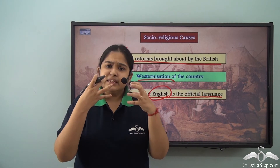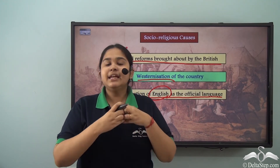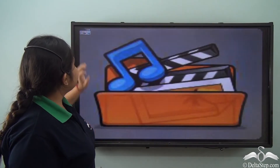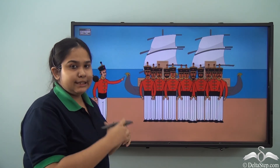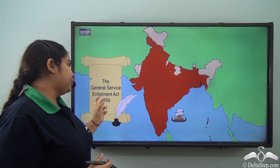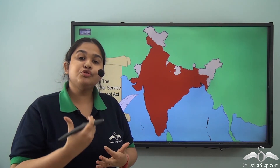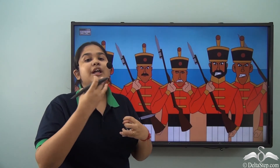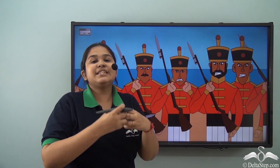Certain decisions being taken by the British company and government were something Indians could not agree with. As seen in the animation, a British official is explaining new ideas to Indian soldiers under the British military. The General Service Enlistment Act of 1856 made it absolutely imperative for every soldier to cross the sea. This was opposed to the Hindu religious ideology that did not allow people to cross oceans or water bodies, known as Kalapani. These people were angered because the British never understood the religious and sentimental side of it.